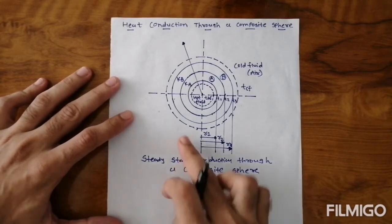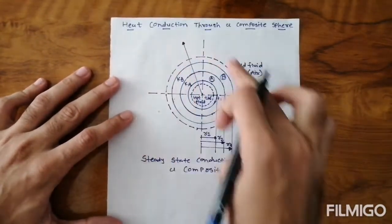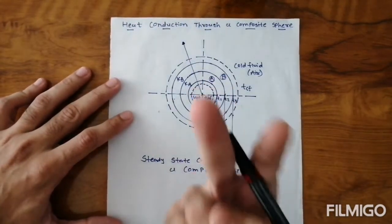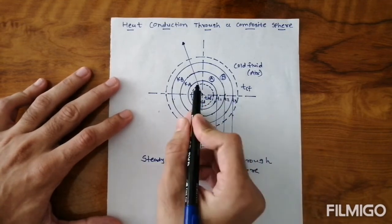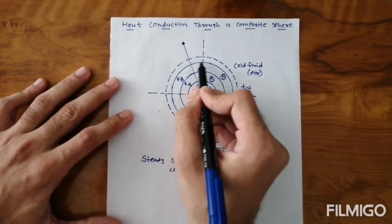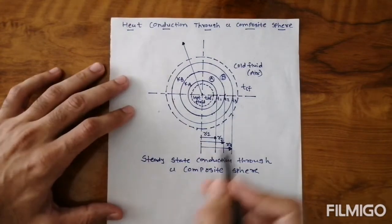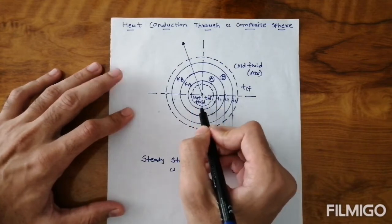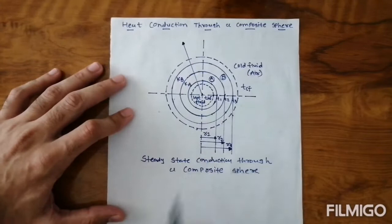Now we consider one cross section of the composite sphere. We consider two layers: layer A and layer B. One sphere is there, covered with layer A and then covered with layer B. Inside the sphere there is hot fluid, and outside layer B there is cold fluid.